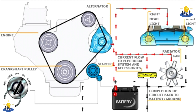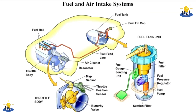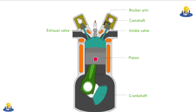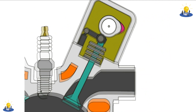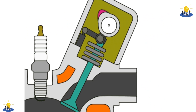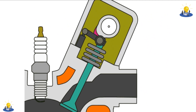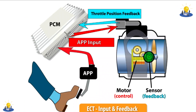One important advantage of electronic throttle control is that the ECU can adjust the throttle angle during acceleration to complement the actual airflow through the engine. This improves the speed at which the air passes through the intake and provides gains in torque and drivability. This is known as torque mapping and is only possible with electronic throttle control.